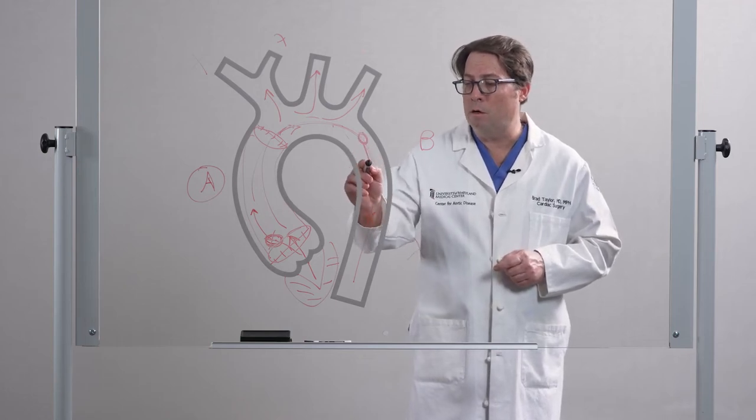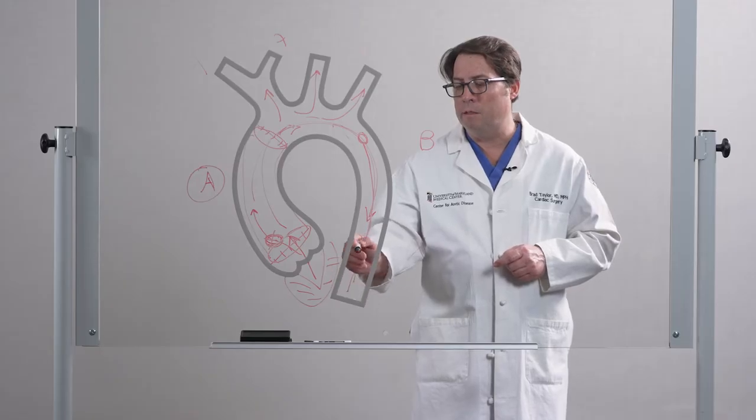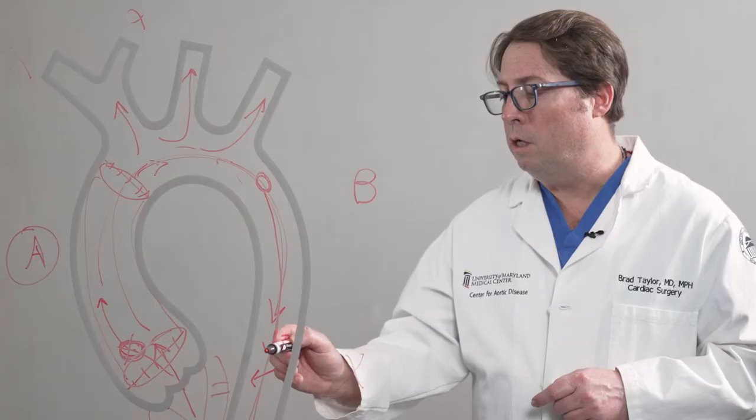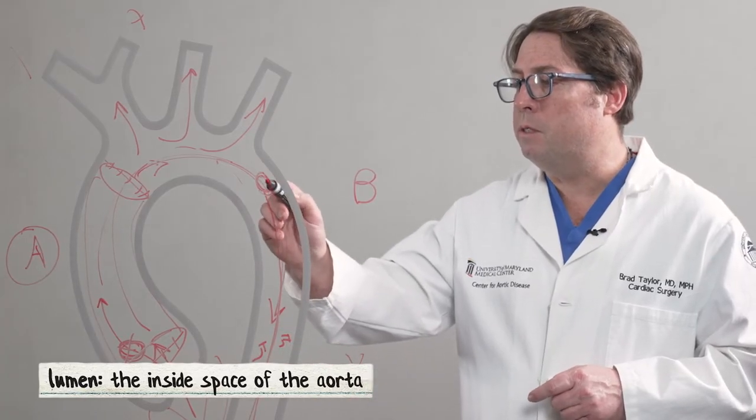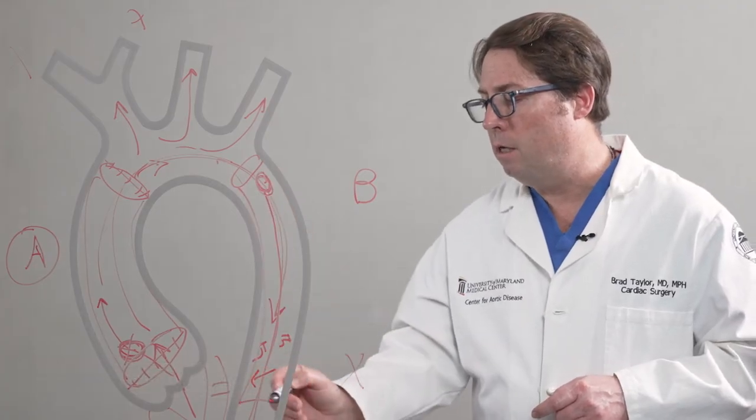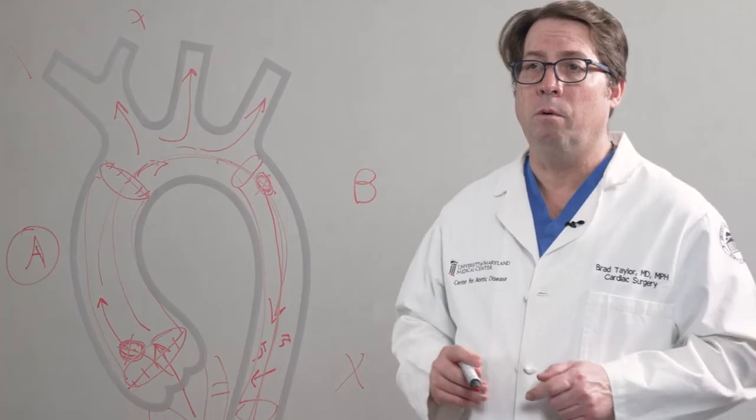But if that tear occurs and it causes a limitation of blood flow because of compression of blood by the false lumen into the true lumen, we then are in a position where we can reline that ascending aorta with the stent graft, cover that tear, and then reestablish flow to the lower body.